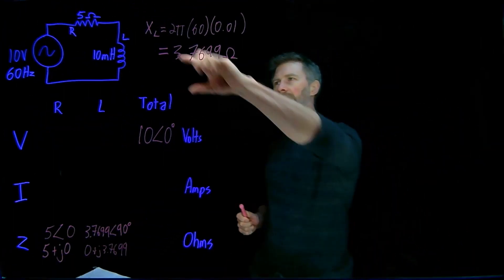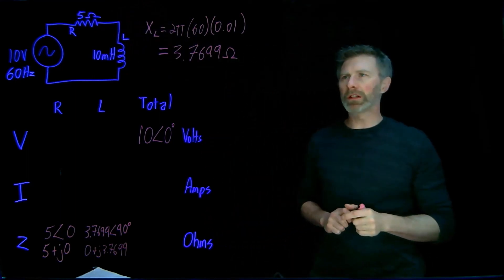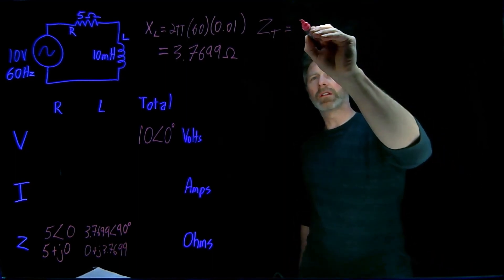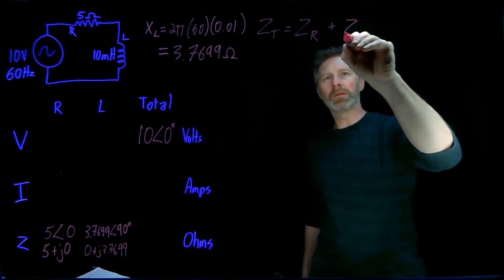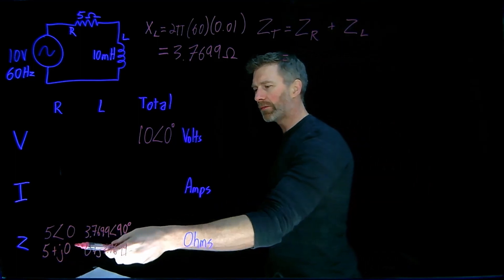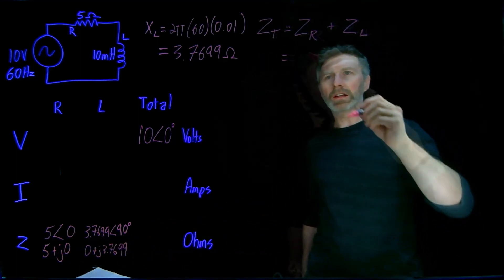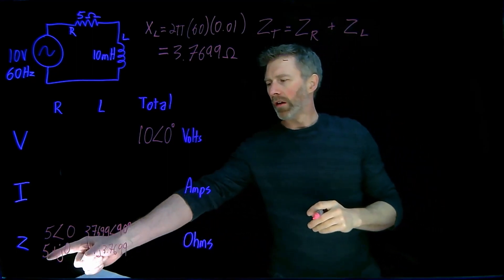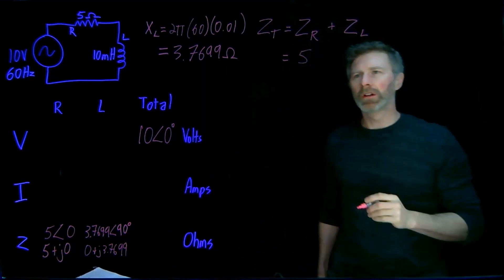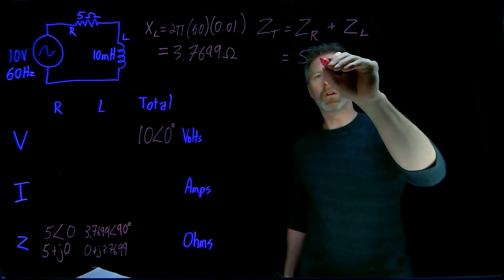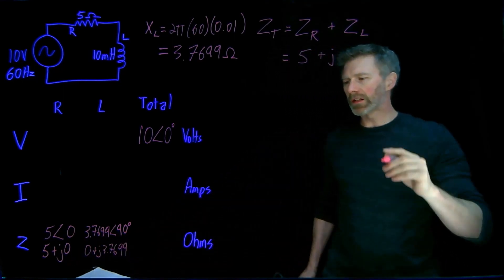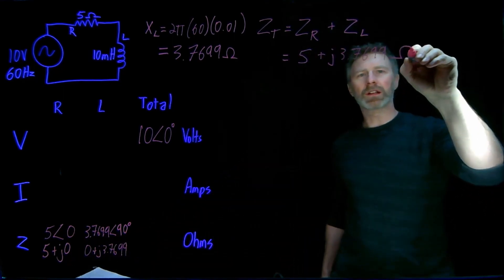The next thing we can do is combine these two impedances to get the total impedance of the circuit. So the total impedance is going to be the vector sum of the impedance of the resistor plus the impedance of the inductor. Additions are always easier to do in rectangular form, so: 5 plus J0 plus 0 plus J3.7699. The real part is 5, and the imaginary part is 3.7699 ohms.